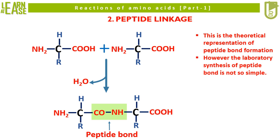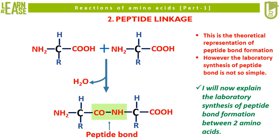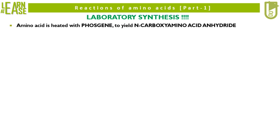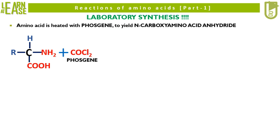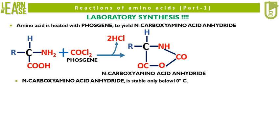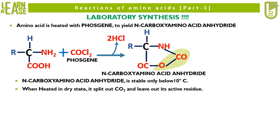However, the laboratory synthesis of peptide bond is not so simple. In laboratory synthesis of peptide bond, amino acid is heated with phosgene to yield N-carboxy amino acid anhydride. N-carboxy amino acid anhydride is stable only below 10 degrees Celsius. When N-carboxy amino acid anhydride is heated in dry state, it splits out CO2 and leaves out its active residue.